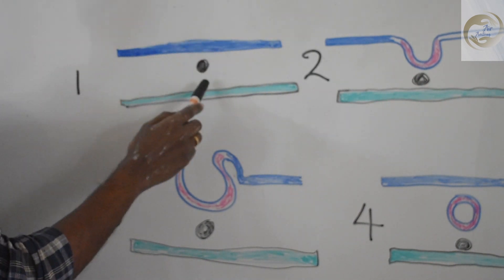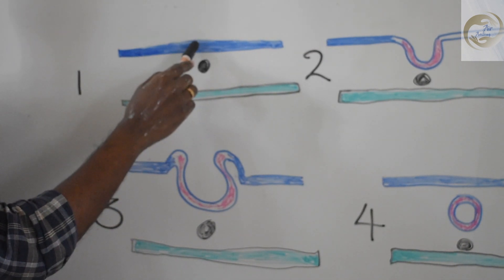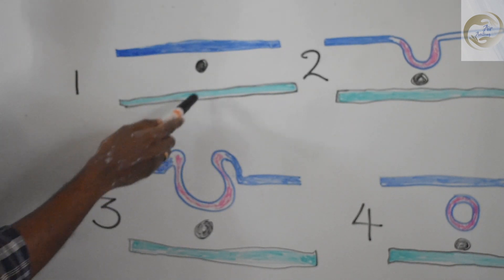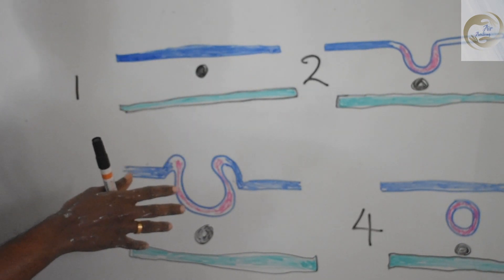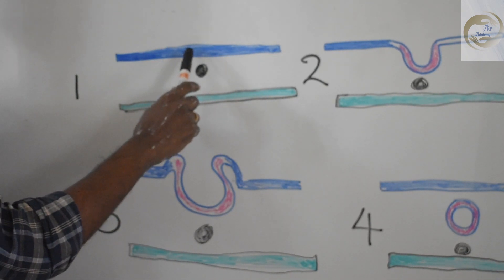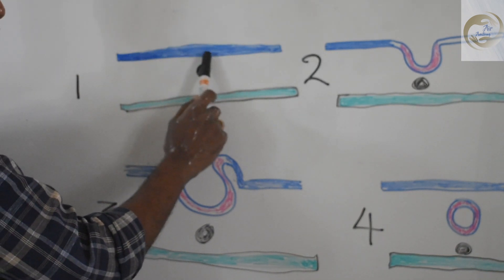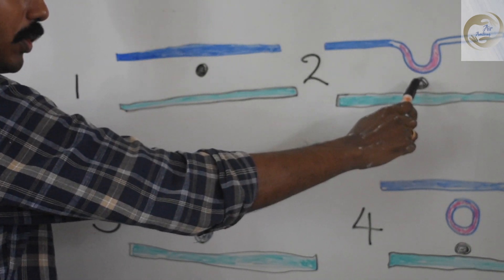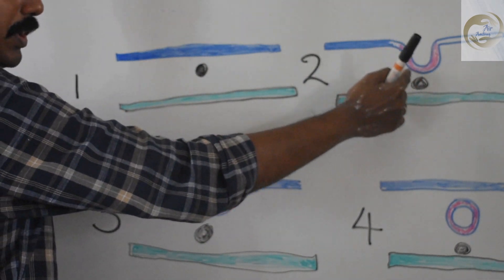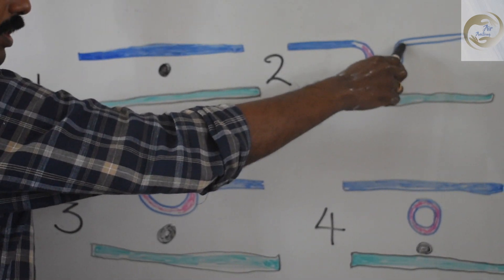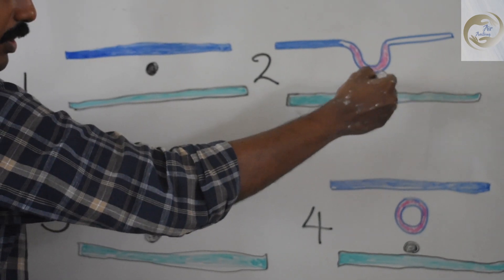Dorsal to the notochord you have the ectoderm, and ventral to the notochord you have the endoderm. The ectoderm just dorsal to the notochord will become specialized — the notochord induces the ectoderm dorsal to it to differentiate into neural tissue, called the neural ectoderm or neurectoderm. The neurectoderm, or neural plate, will then invaginate towards the notochord, forming a groove called the neural groove. The neural plate is shown here in a different color.